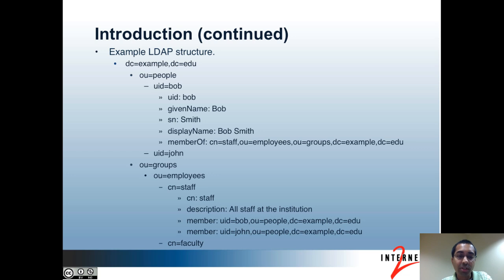But it's also common to have sub-OUs under OU=people to reflect your organizational hierarchy at your institution. There are two entries under OU=people: UID=Bob and UID=John. The full DN for Bob's entry is UID=Bob,OU=people,DC=Example,DC=EDU. The UID=Bob portion is known as the RDN. You can really use any attribute of the entry as the RDN, but folks typically use CN or UID for people and CN for groups. CN stands for Common Name and UID is the User ID.